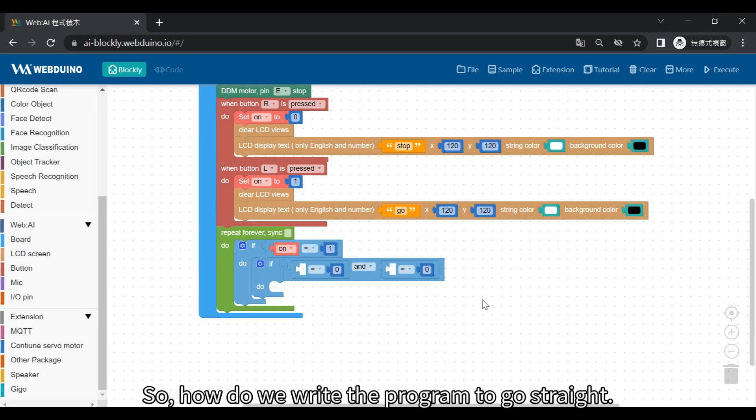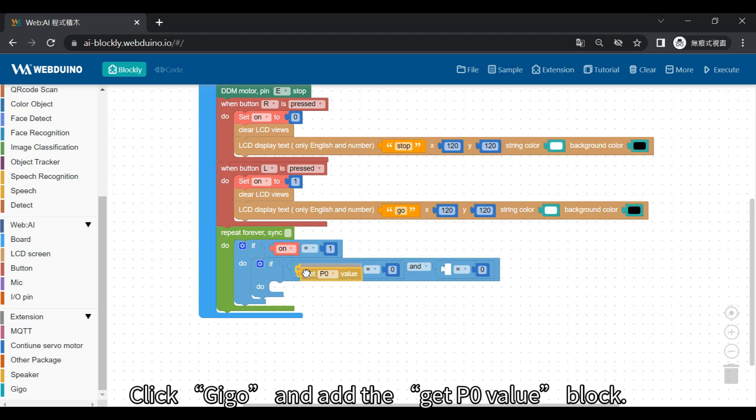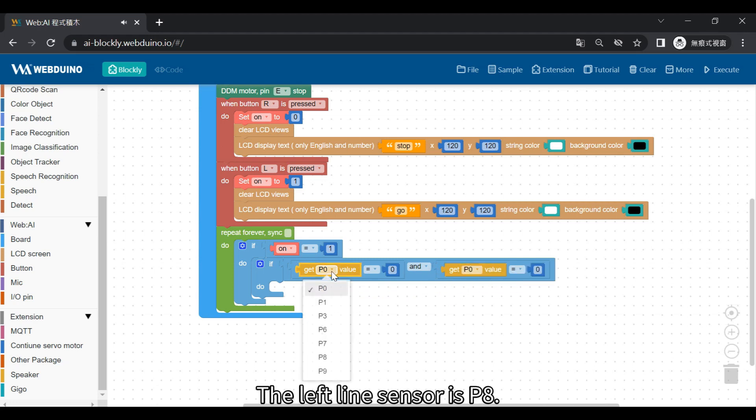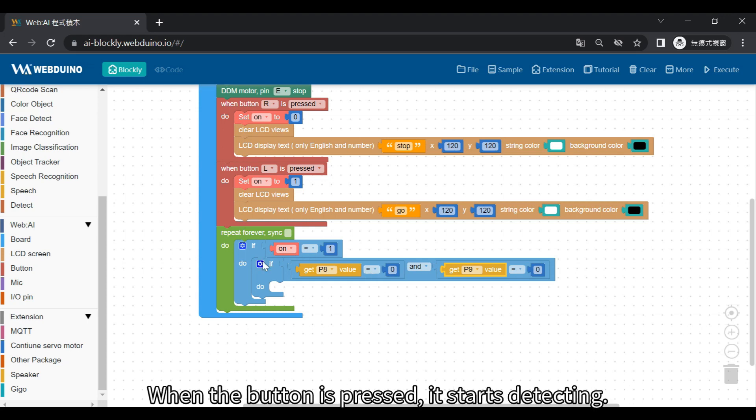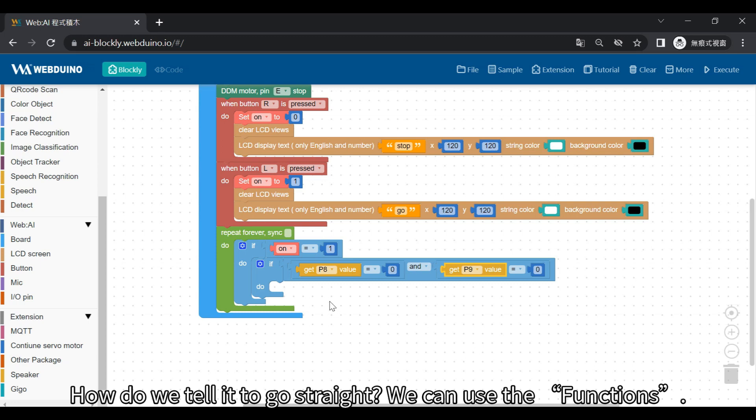So, how do we write the program to go straight? Click Geico and add the get P0 value block. We have two sensors, so copy this block again. The left line sensor is P8. The right line sensor is P9. Make sure that both values are zero. It may seem complicated, so let's discuss why we do it. When the button is pressed, it starts detecting. If both sensors see the floor, the device will go straight. How do we tell it to go straight? We can use the functions.